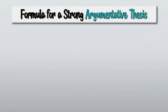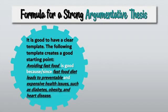So, the formula for a strong argumentative thesis. It is good to have a clear template. The following template creates a good starting point — this is just an example: avoiding fast food is good because — or since — a fast food diet leads to preventable and expensive health issues such as diabetes, obesity, and heart disease.